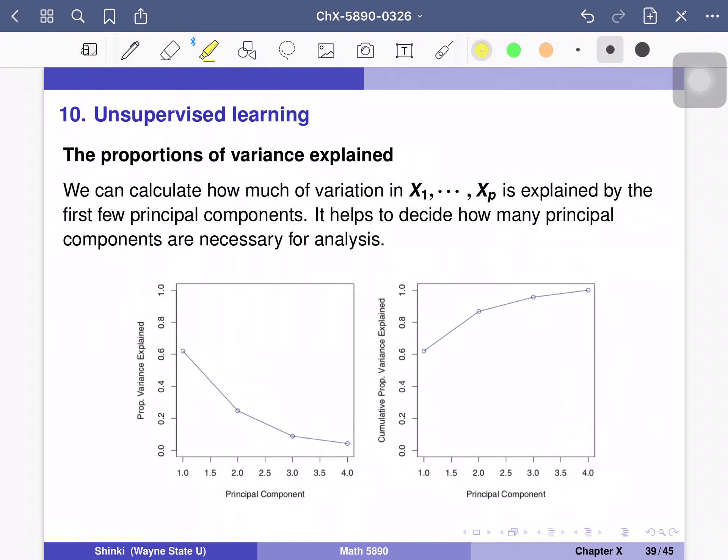So this is the explanation of PCA. And one useful information for PCA is proportions of variance explained. We can calculate how much of variation in x1 to xp is explained by the first few principal components. It helps to decide how many principal components are necessary for analysis.